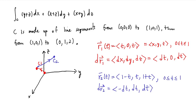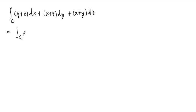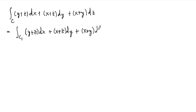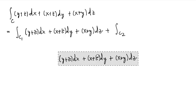So our integral is ∫_C (y + z) dx + (x + z) dy + (x + y) dz. This is going to be broken up as the sum of two integrals: first over C1, then we add to this the integral over C2 — same integrand functions, just breaking up the domain.